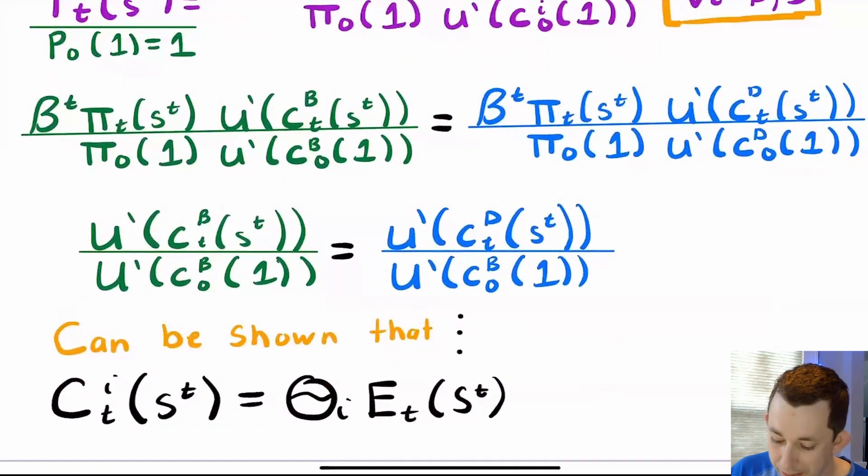And notice that what that is going to be is now we have a ratio of marginal utilities between Bill and Dave in time period t for an event history s superscript t compared to the marginal utility of that same person in time zero where the weather in time zero is sunny. So we can go through a bunch of steps to show that if we have a relatively well-behaved utility function, that we're going to get that every person in every event history is going to consume some fixed ratio theta_i of the aggregate endowment in that given state. I'm not going to show that in this video. If that would be helpful to see, leave a comment below and I will make a subsequent video. Otherwise, we're going to keep going.